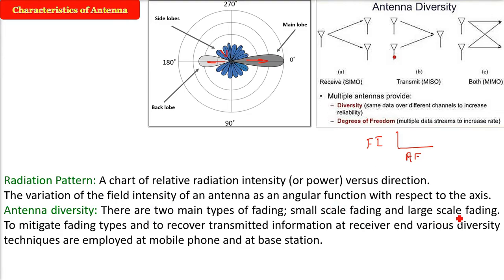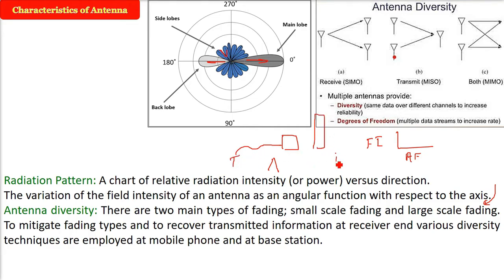Antenna diversity — there are two main types of fading: small-scale fading and large-scale fading. The baud rate may create certain fading. There is also multipath fading, which involves constructive and destructive interference. A wave from the transmitter antenna to the receiver can follow different paths, creating constructive or destructive interference, causing a loss. To compensate for that loss and to recover transmitted information at the receiver, various diversity techniques are employed at mobile phones, base stations, and satellite stations. This is antenna diversity.